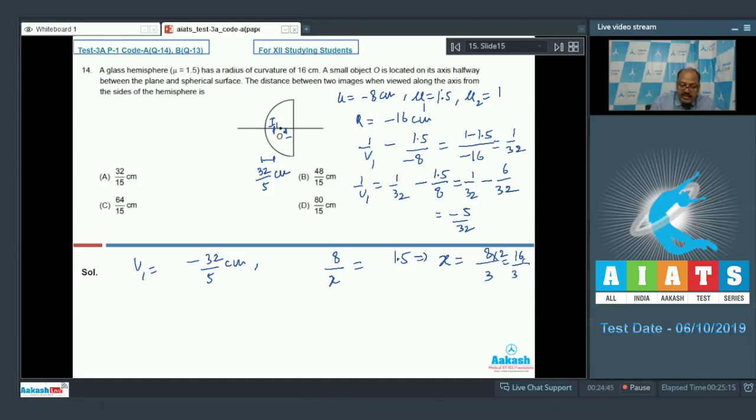We have to find the distance between them. So, the distance between the two images is equal to, let us call it D, is equal to the radius which is 16 cm minus 32 by 5 plus 16 by 3. And if we solve it further, we will find it comes out to be 64 by 15 cm, which matches with option C. So, option C is correct. Let us go to the next question now.